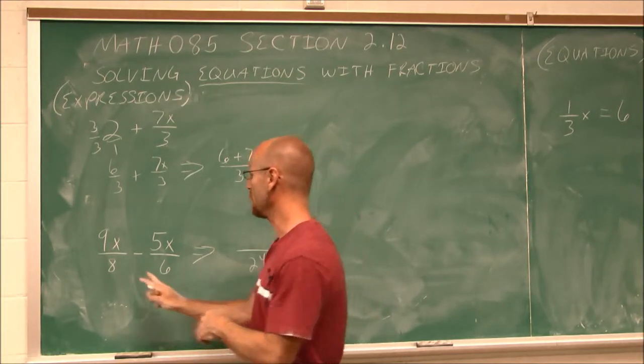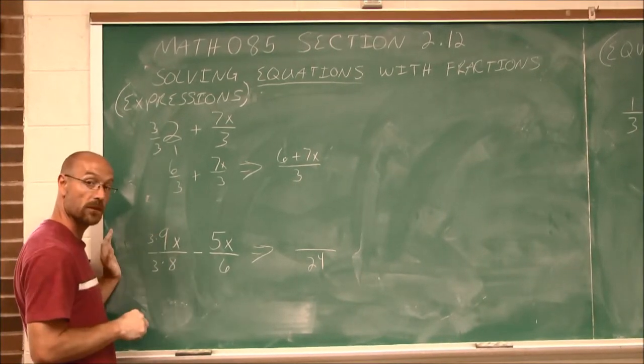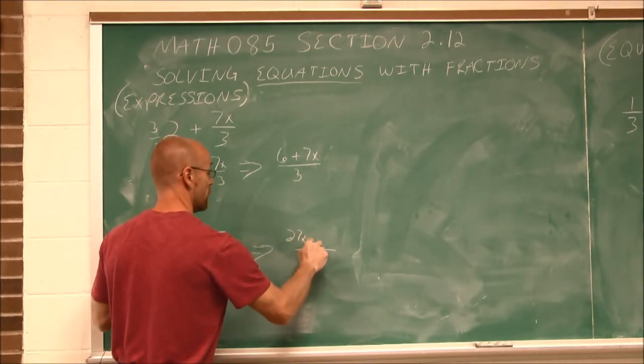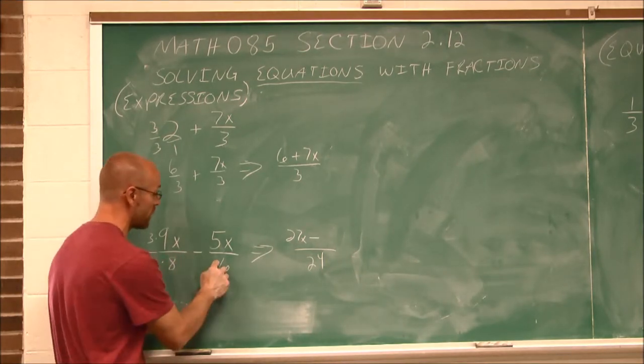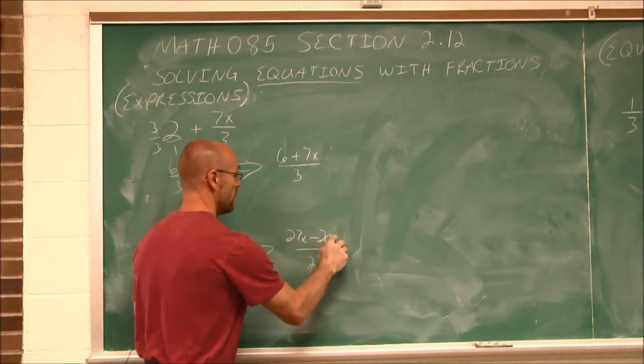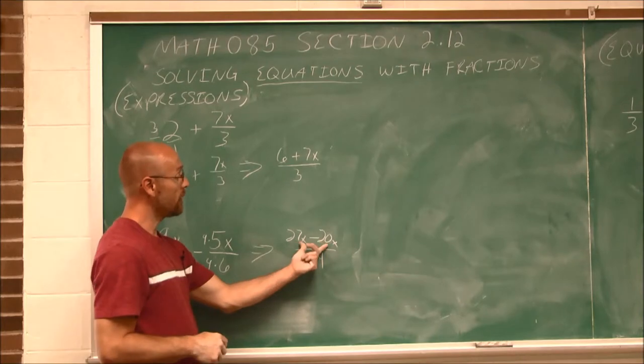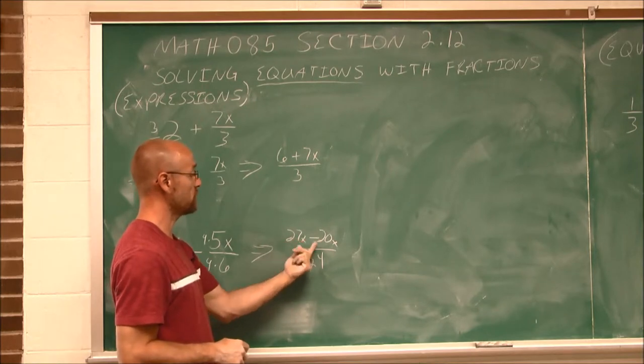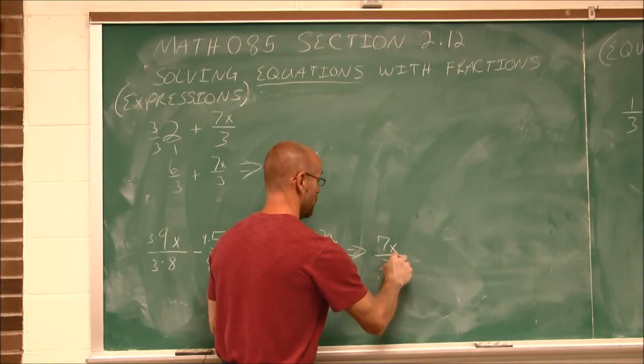So this is going to have a common denominator of 24. So how do we go about that? If we look at this one here, I'd have to multiply this by 3. What I do to the bottom, I have to do to the top. 3 times 9 is 27x over 24. And this one here, to make this 24, I got to multiply it by 4. What I do to the bottom, I do to the top. 4 times 5 is 20x over 24. So they both have that 24 as a denominator. Now we notice these weren't like terms, but these ones are. So we can do this subtraction.